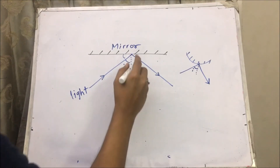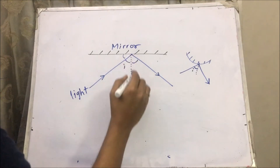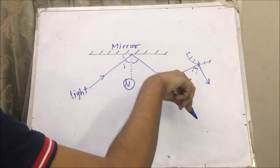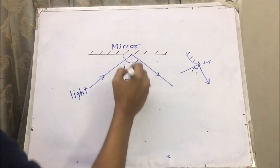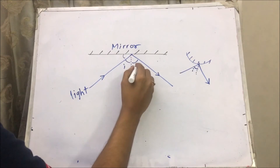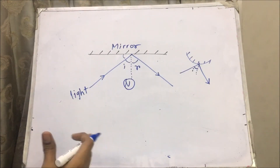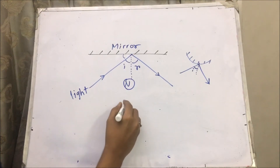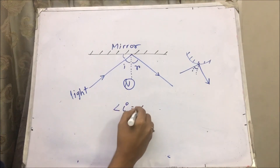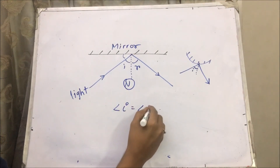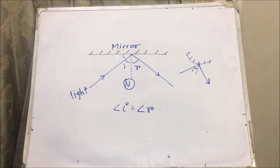Similarly, what is the angle of reflection? The angle between the outgoing ray and the normal to the mirror — that's the angle of reflection. And the law of reflection is: angle of incidence is equal to angle of reflection, simple as that.